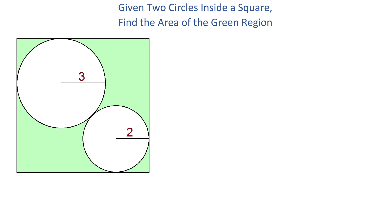To solve this problem, first we have to find one side of this square, and once we know one side, we can find the area of the entire square. Then, once we find the area of the square, we will subtract the areas of the circles, and we will get the area of the shaded region.